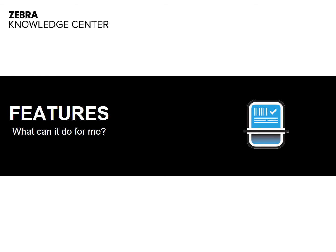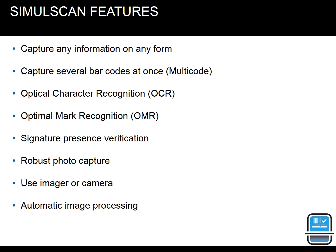Let's have a look at the SimulScan features. SimulScan is loaded with features that make capture of whatever data you need easy for you and your workers. Capture any information on any form — it's easy to capture an entire form or specific data in select areas. Capture several barcodes at once; users can simultaneously scan 1D or 2D barcodes in virtually any condition, even if they are scratched, poorly printed, or dirty. Optical Character Recognition (OCR) lets users capture text in any field and turn it into editable data. Optimal Mark Recognition (OMR) allows users to capture the state of checkboxes, radio buttons, and bubbles on forms.